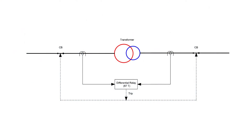The principle of the differential protection scheme is one simple conceptual technique. The differential relay actually compares between the primary current and secondary current of a power transformer. If any unbalance is found between the primary and secondary currents, the relay will actuate and inter-trip both the primary and secondary circuit breakers of the transformer.